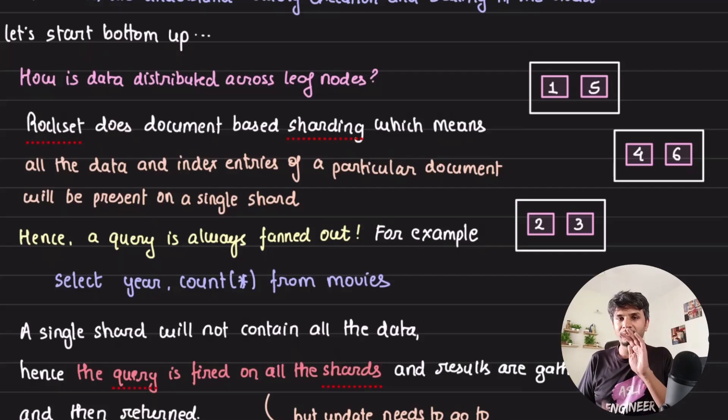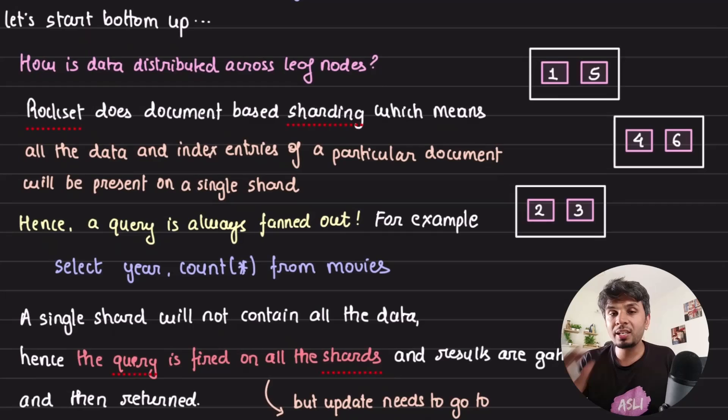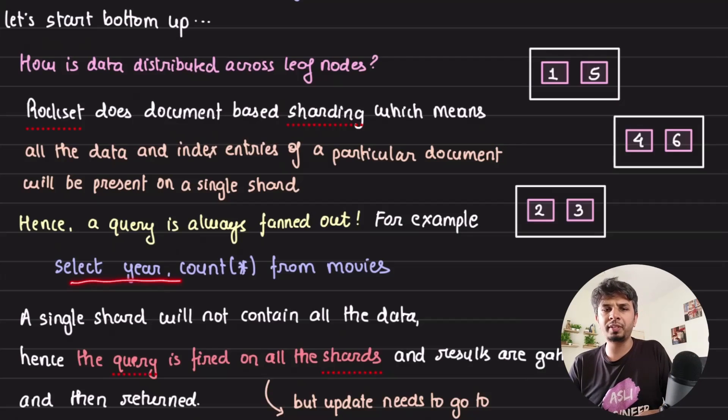This has a pro and a con - like everything in computer science, everything is a trade-off. There's an interesting trade-off here. Given that we are doing document-based sharding, we don't know for a query that we are looking for - let's say I want to look for select year, count(*) from movies.